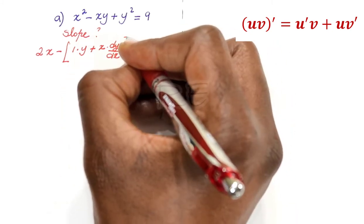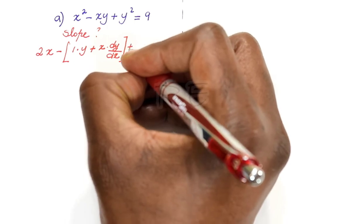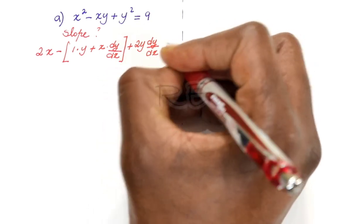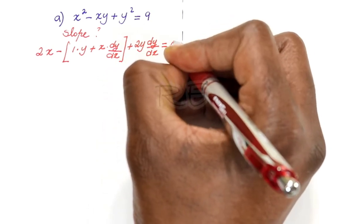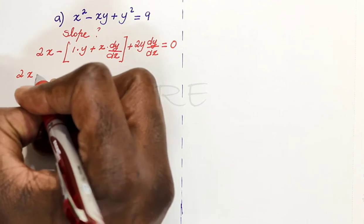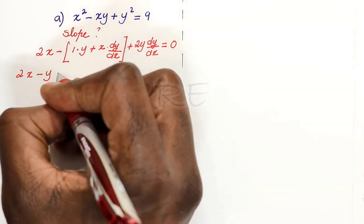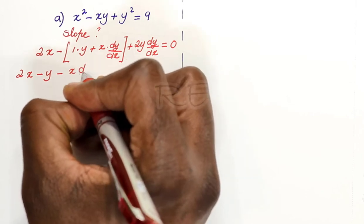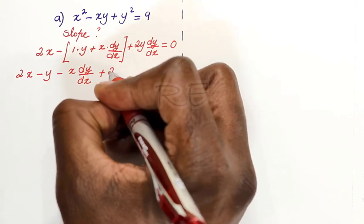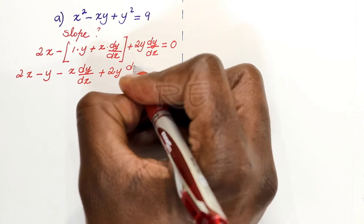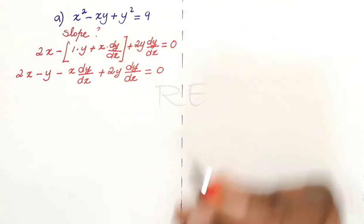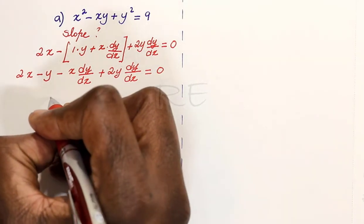We use the chain rule because the variables do not agree. Same thing for y squared, it's 2y dy dx is equal to 0, since the derivative of 9 is 0. We need to clean up: 2x minus y minus x dy dx. We distribute the negative sign, plus 2y dy dx is equal to 0.